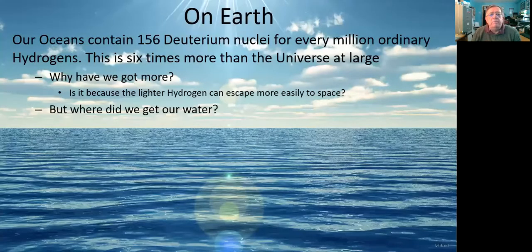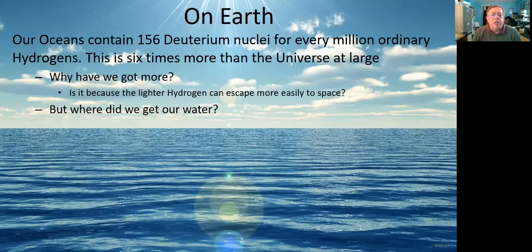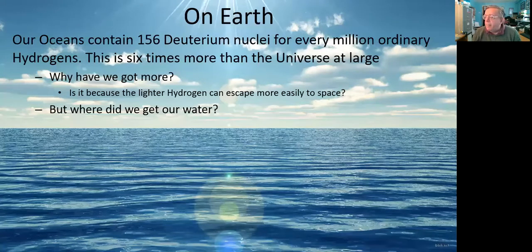On Earth, it's much more than that. It's 156 parts per million, not 26. Six times as much as the universe at large. A little bit strange, really. And one of the possibilities is that the lighter hydrogen could escape out to space and leak away slightly faster than the heavier deuterium. But it still begs the question, where did we get all of this water from?